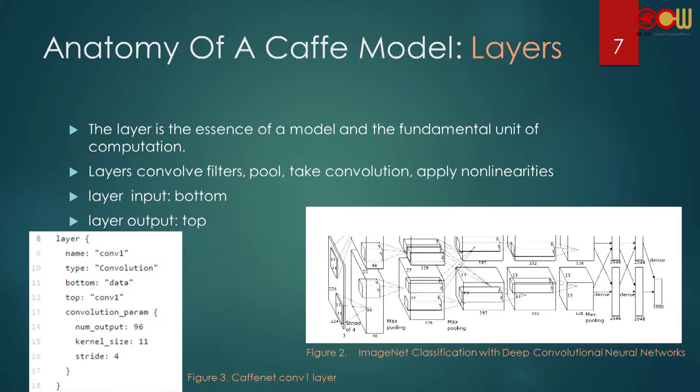The second concept to build a Caffe model is layers. A deep learning structure is based on layers. We can define convolution layers, pooling layers, activation layers, normalization layers, or fully connected layers.